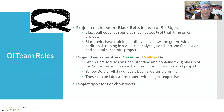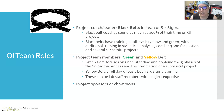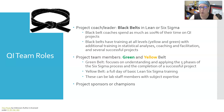Let's look at the quality improvement team roles. The project coach or leader is usually a black belt in Lean or Six Sigma. Black belt coaches spend as much as 100% of their time on quality improvement projects. Black belts have training at all levels — yellow and green. The green belt focuses on understanding and applying the five phases of the Six Sigma process, and they have at least one successful project that they have completed. A yellow belt has received a full day of basic Lean Six Sigma training.